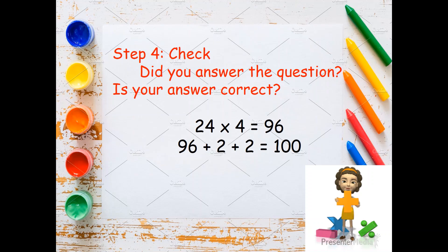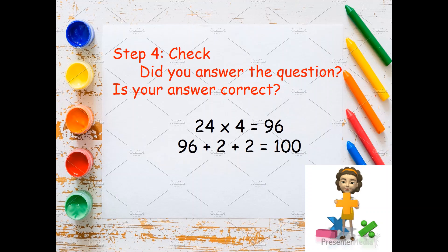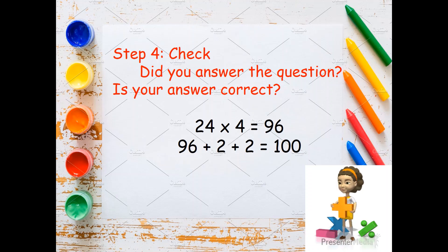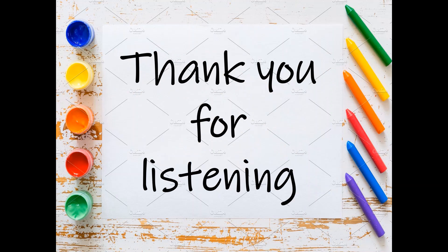The last step is to check — did you answer the question? Is your answer correct? 24 times 4 equals 96. Then 96 plus 2 equals 98. Then 98 plus 2 equals 100. That's it for today. Thank you for listening!